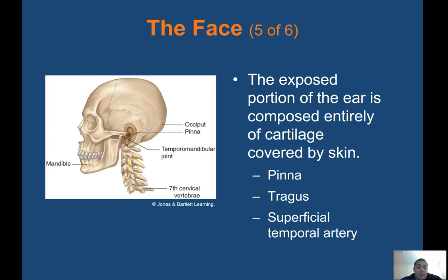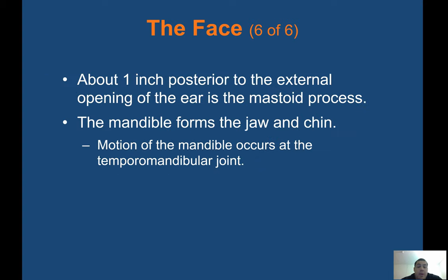You have your C-spine, your cervical bones, your temporal mandibular joint — basically where your jaw pivots — your occiput, the back of your head, and then your ear, your pinna. About one inch posterior to the external opening of the ear is the mastoid process. The mandible forms the jaw and chin. Motion of the mandible occurs at the temporal mandibular joint.